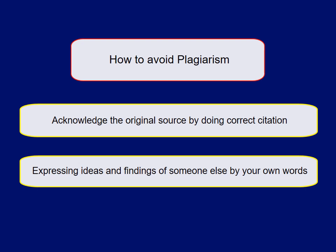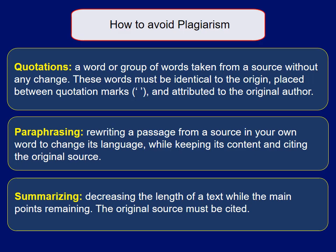So what can you do to avoid plagiarism? First, acknowledge the original source by doing a correct citation. Second, express the ideas and findings of someone else in your own words. There are different methods used in writing to avoid plagiarism. The first one is quotation, which means a word or group of words taken from a source without any change — these words must be identical to the origin. You can copy them and place them between quotation marks, then attribute them to the original author.